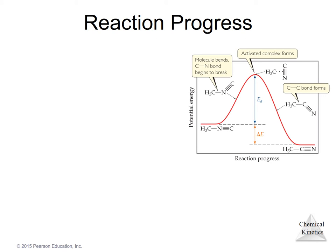This graph shows reaction progress for a simple isomerization. In this reaction, the molecule shown here undergoes an isomerization reaction where the carbon and the nitrogen connected by that triple bond change places, and you can see the product over here on the right-hand side.